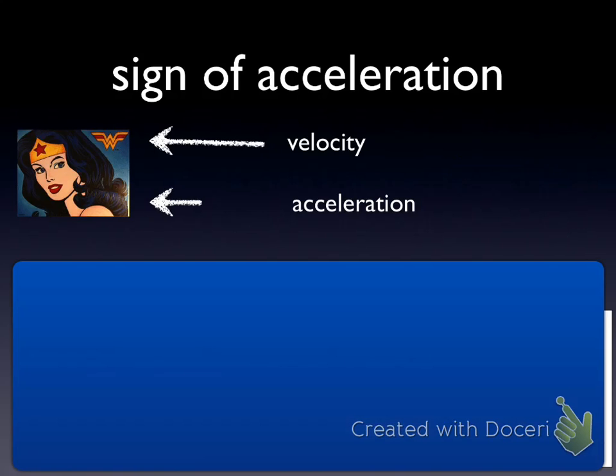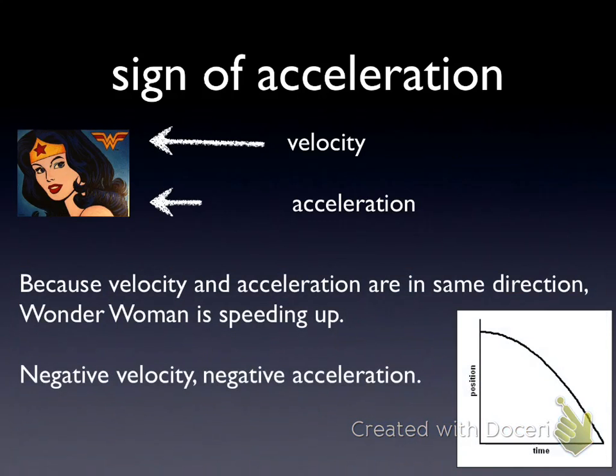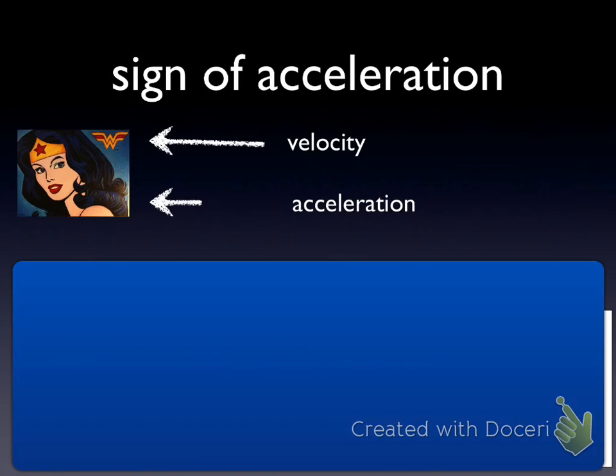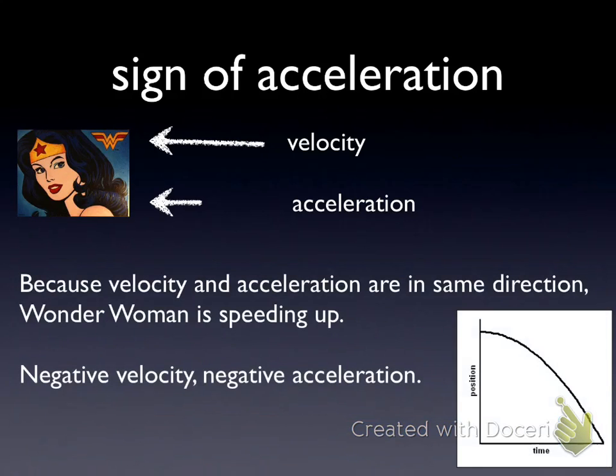Now what does Wonder Woman do? She's moving in the negative direction with a negative velocity. She's got an acceleration happening in the same direction. These two vectors are going in the same way, so she's going to speed up. In this case, a negative velocity and her negative acceleration create a function whose slope is getting larger.